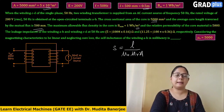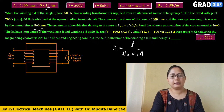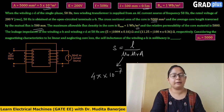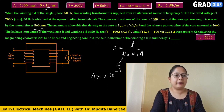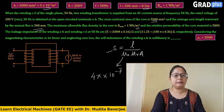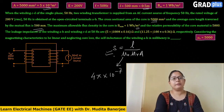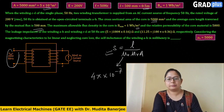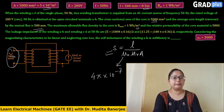Substituting into the reluctance formula S = l / (μ₀ · μR · A): l = 0.5, μ₀ = 4π × 10⁻⁷, μR = 5000, A = 5 × 10⁻³ m². Calculating this gives a reluctance S = 15,915.49 ampere-turns per weber. Next, we need the number of turns N of winding AB.